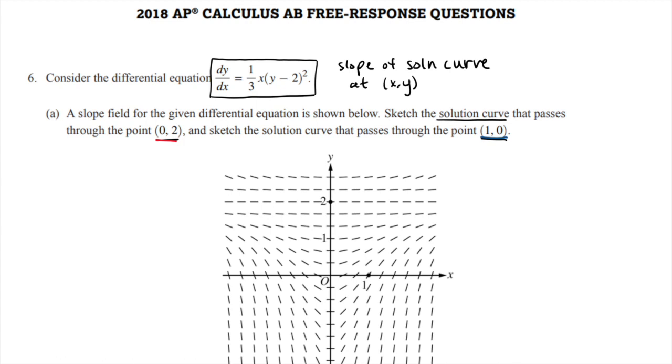Going through the point (0,2)—so that's this point—to draw the solution curve, we just follow the slope field. Basically, this is where we're starting. This line is telling me move horizontal, then I get to this line that says move horizontal. Continue following the tick marks that way. In other words, it looks like the solution that goes through that point is just y equals 2. We don't have to write that, we just need to sketch it.